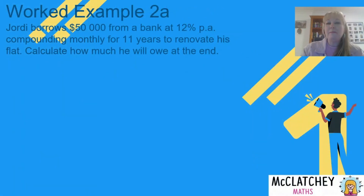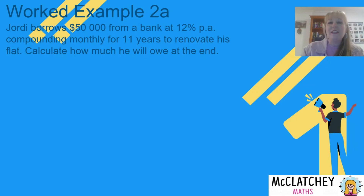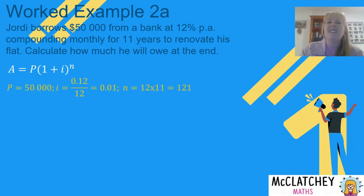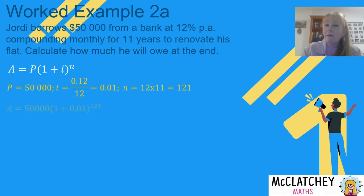Worked example: Jordy borrows $50,000 from the bank at 12% per annum compounded monthly for 11 years to renovate his flat. We want to calculate how much he will owe at the end. This is a perfect situation for the general rule — we don't want to press equals on our calculator more than 100 times. Write the formula first, then state your variables. I equals 0.12 divided by 12 (compounded monthly), and N equals 11 years multiplied by 12 compounding periods, giving 132 compounding periods in total. Now substitute into the equation.